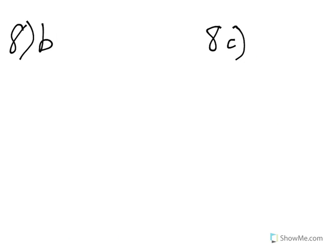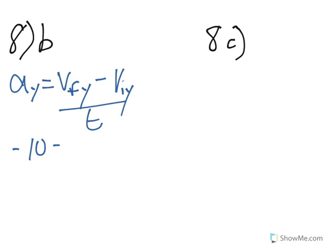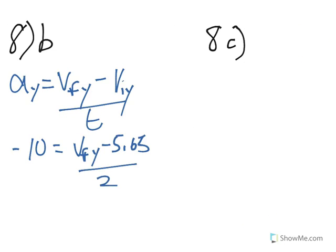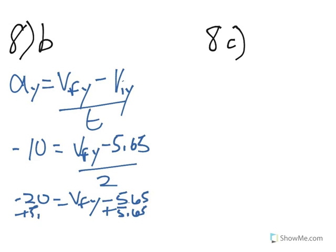Number 8B: what is the vertical speed of the ping pong ball after 2 seconds? We use the acceleration formula: ay equals (vfy minus viy) over t. So negative 10 equals vfy minus 5.65, divided by 2. Solving: negative 20 equals vfy minus 5.65. Adding 5.65 to the other side gives vfy equals negative 14.35 meters per second.